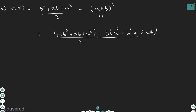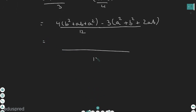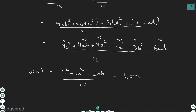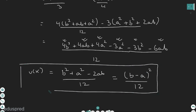Expanding the numerator: 4b squared plus 4ab plus 4a squared minus 3a squared minus 3b squared minus 6ab. Collecting terms gives b squared plus a squared minus 2ab, all divided by 12. We can clearly see that the numerator is b minus a whole squared and the denominator is 12. So variance of X equals b minus a whole squared divided by 12, which is the derivation of the formula.